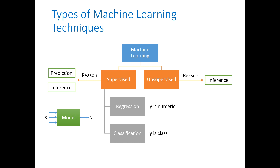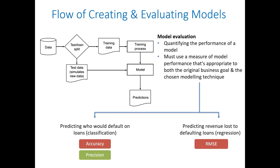That is what we learned in part one of module four. Now in part two we look at the flow of creating and evaluating models. Given data, the first thing you want to do is split your dataset into training data and test data — this is called the test-train split. Normally 70% of your data is used as training data, randomly chosen, and the remaining 30% as test data, though it can be 80/20 or 90/10 depending on your needs.